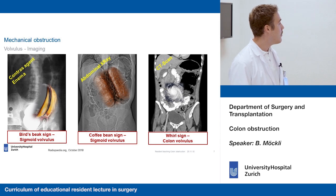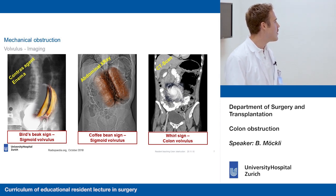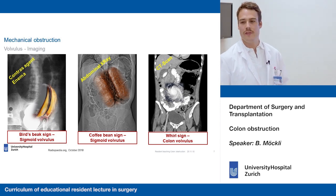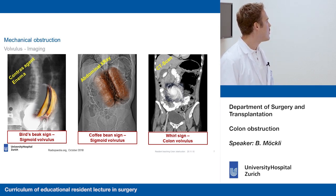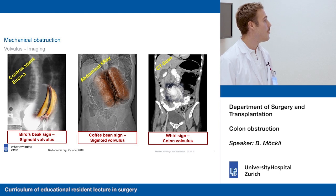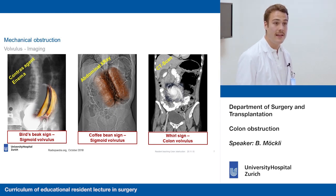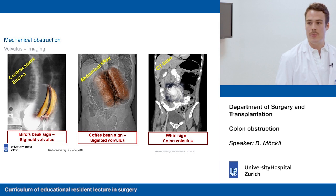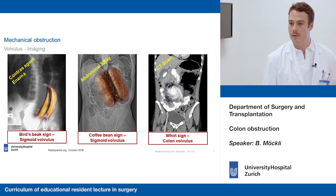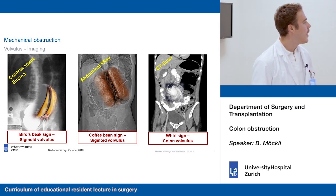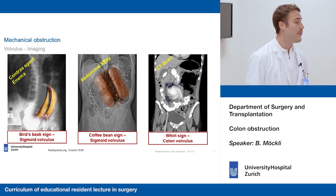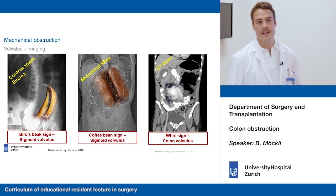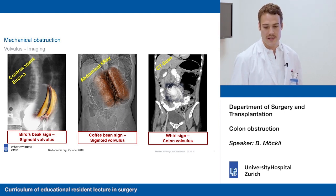These three imaging modalities also represent the tools we have available for the workup of colonic obstruction: barium enema, abdominal X-rays which are handy to follow a patient over time — easily available and easily performed, doesn't take a lot of time — and then the gold standard today, the CT scan, which is very specific and very sensitive.